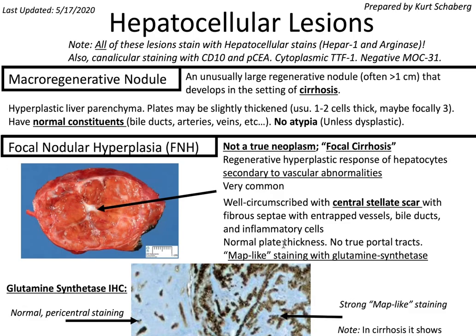Thank you again, Dr. Shabberg, for these excellent notes. Let's do our rapid fire review. Hepatocellular lesions: all stain with HepAR1 and arginase; canalicular staining with CD10 and PCEA; cytoplasmic TTF1; and negative MOC-31. Macro-regenerative nodule: often in the setting of cirrhosis, hyperplastic liver parenchyma with normal constituents — bile ducts, arteries, veins — without atypia unless dysplastic.